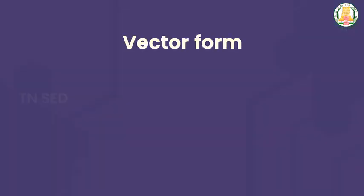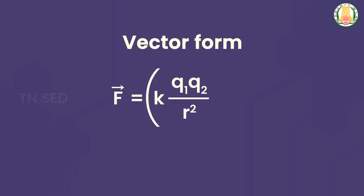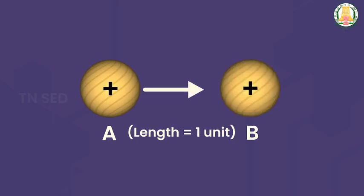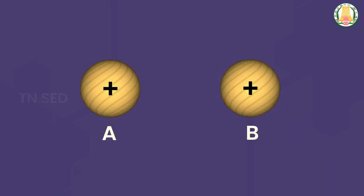Now let's look at the vector formula for Coulomb's law. The vector formula is F = K × Q1Q2 / R² × R̂, where R̂ is the unit vector. R̂ is a unit vector with a magnitude of 1 unit, used as a reference vector to indicate direction. We can use R̂ to represent the direction of the force, and −R̂ to represent the exact opposite direction.